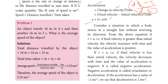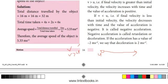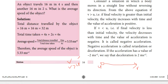Consider a situation in which a body moves in a straight line. If the final velocity V is greater than the initial velocity U, the speed increases — the acceleration is positive. Now if V is less than U — for example, from 30 km/h to 20 km/h — the acceleration is negative.